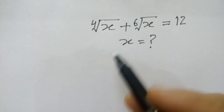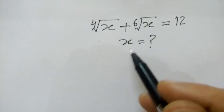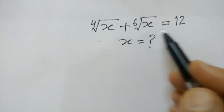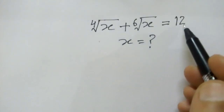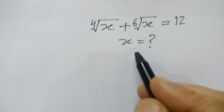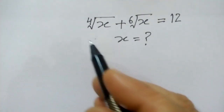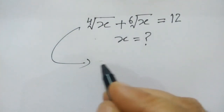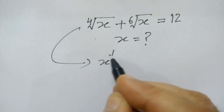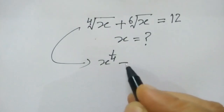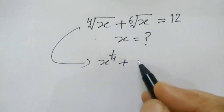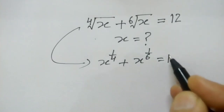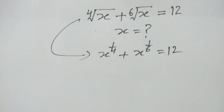Hi friends, we have a nice problem. The 4th root of x plus the 6th root of x is equal to 12. We have to find the value of x. This can be written as x to the power 1/4 plus x to the power 1/6 is equal to 12.